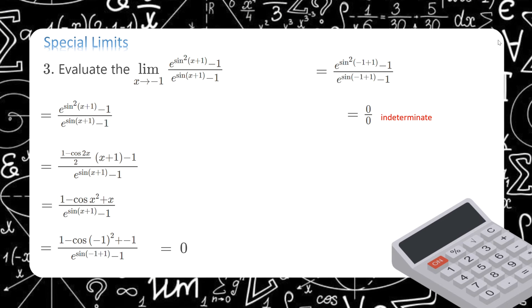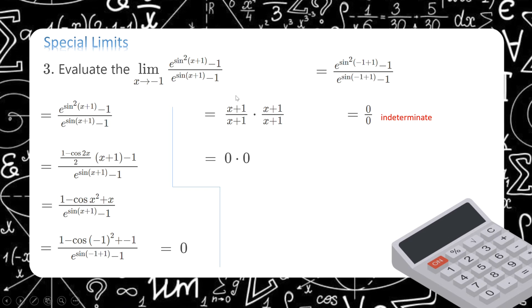Here is another way to solve this equation: manipulate by multiplying the numerator and denominator by similar expressions, specifically (x+1)/(x+1). When we evaluate, the value of this expression approaches zero, so the answer is zero.